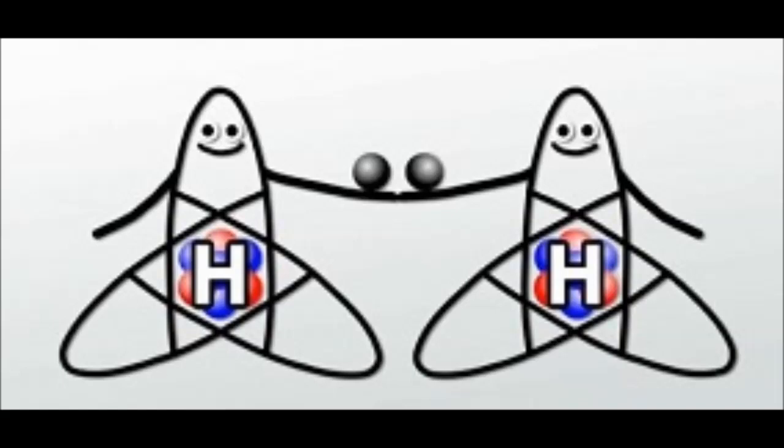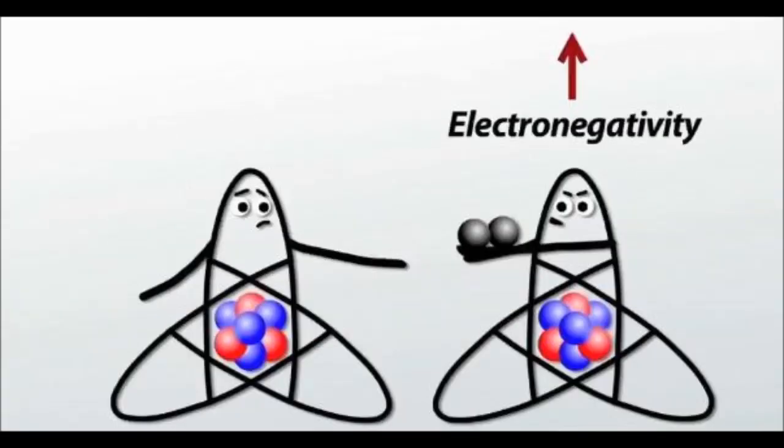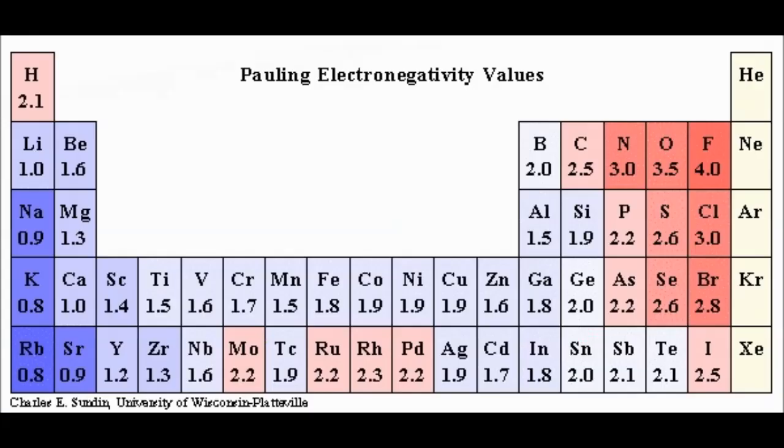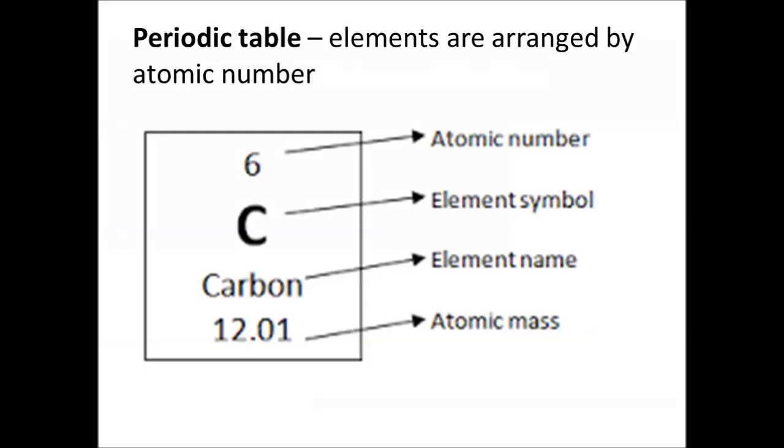Electronegativity of an atom is a measure of its power to attract electrons that it is sharing in a covalent bond. It is the capacity of an atom to attract the shared pair of electrons towards itself. In a covalent bond AB, if B has greater power to attract the bonding pair of electrons, it is said to be more electronegative. Atoms of different elements have different electronegativities. Electronegativity depends on various factors like atomic number, atomic radius, etc.